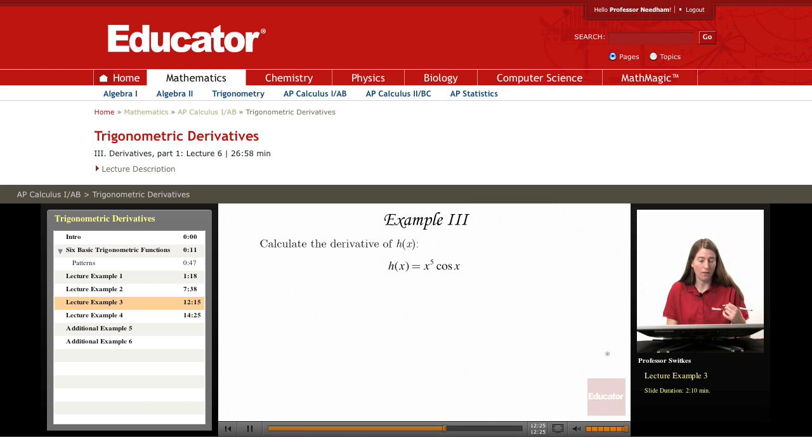Here we'll be differentiating x to the fifth times cosine of x. We'll need to use the product rule, so let me just get us set up for that.